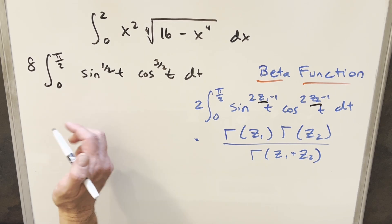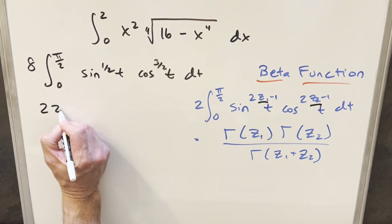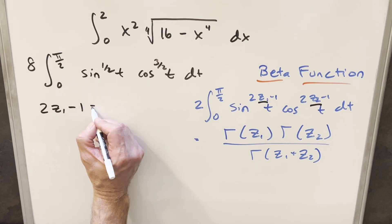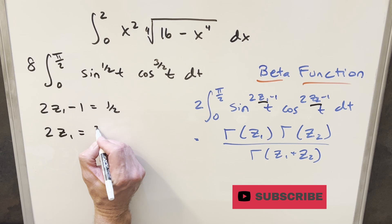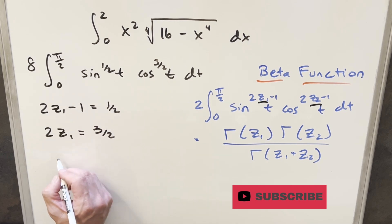So we just need to manipulate this exponent a little bit like so on the sine, our exponent is 1 half. So we're saying 2z1 minus 1 equals 1 half. So we can just solve for z1, adding 1 on both sides, we have a 3 halves here, dividing, we have our z1 value equal to 3 over 4.